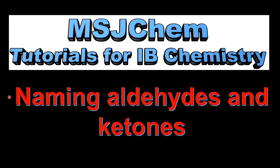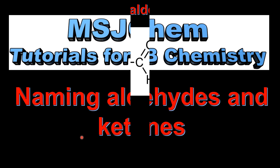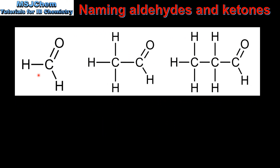This is MSJChem. In this video I'll be looking at naming aldehydes and ketones. We'll start with the aldehydes, which have a carbonyl group at the end of the molecule.